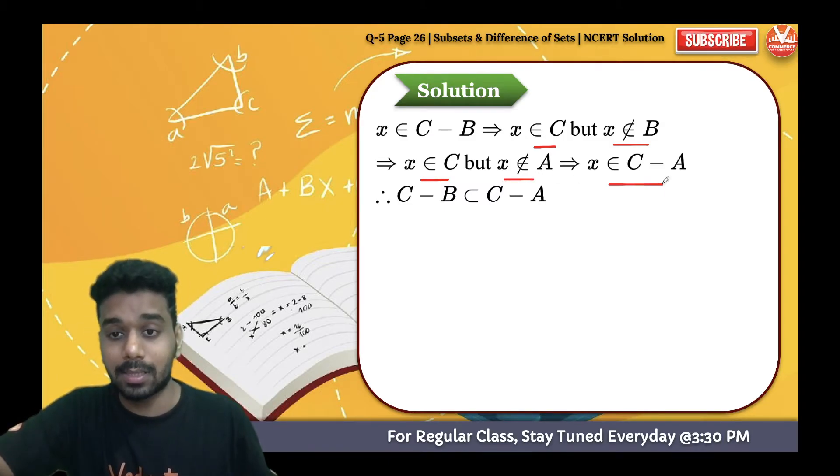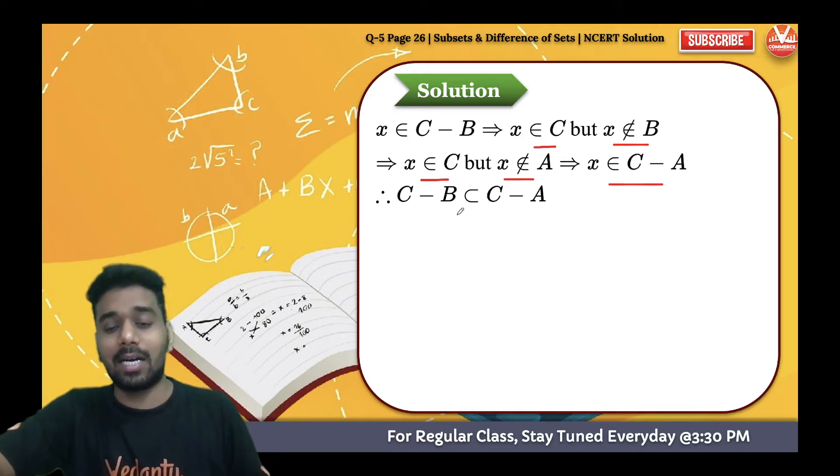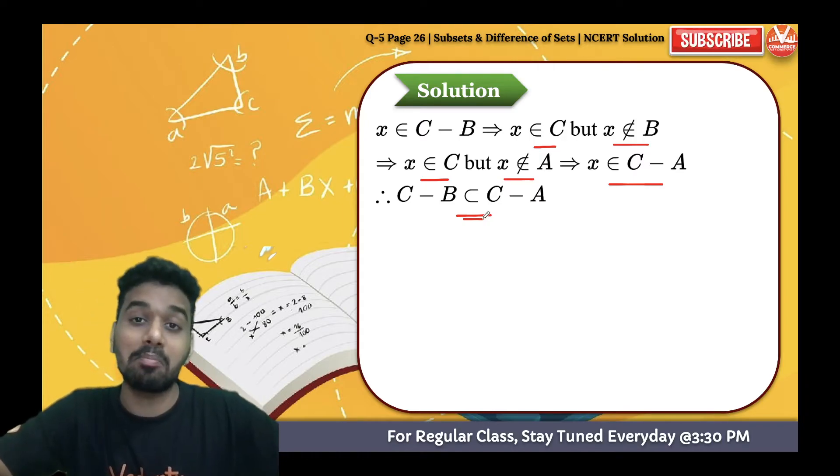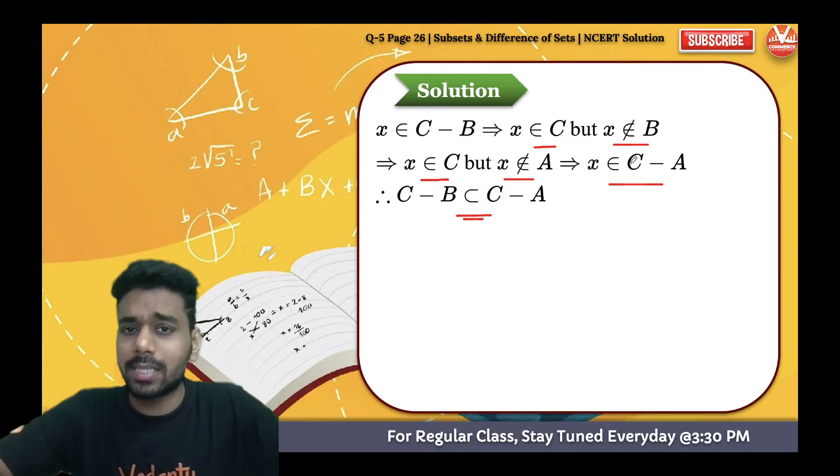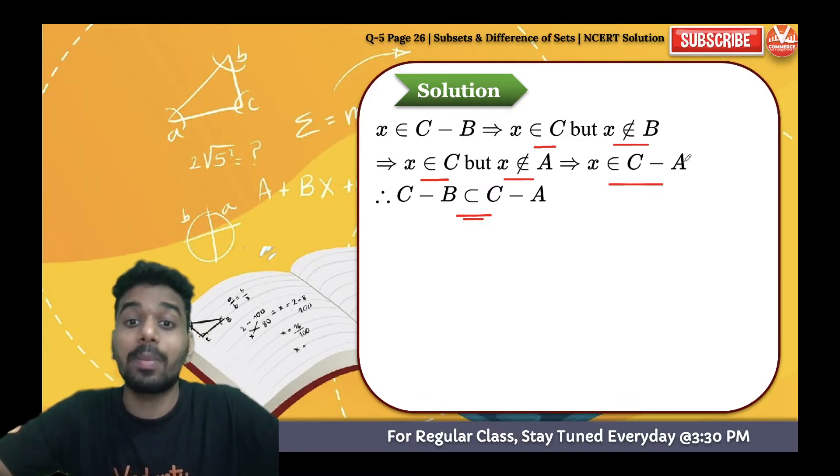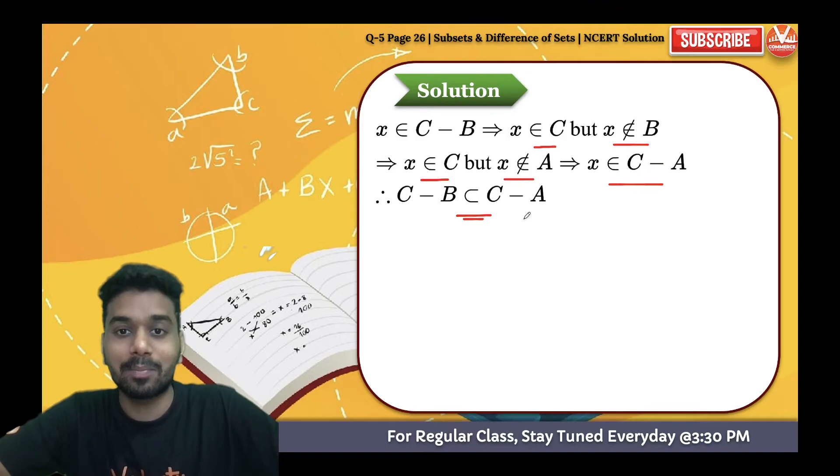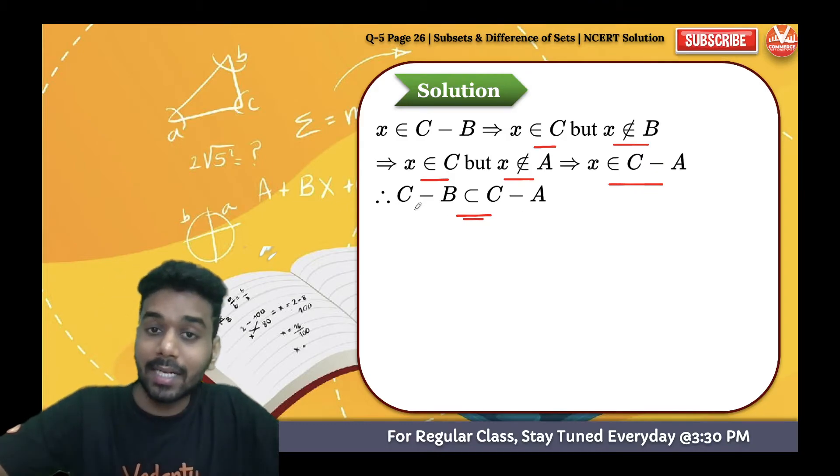This is what we have seen through the example, and now the direct conclusion is this. But you know, to understand this conclusion you have to take an example. You can understand like this: C minus A is a bigger set, C minus B is a smaller set.